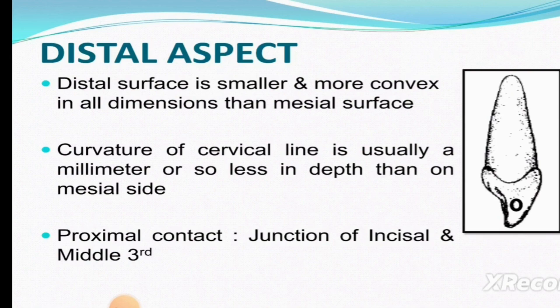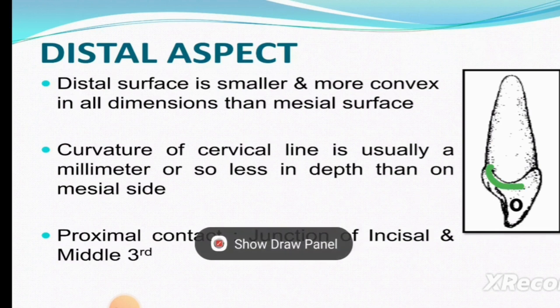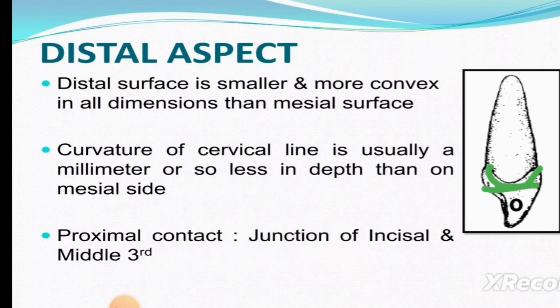The distal surface is smaller than the mesial surface and more convex. The curvature of the cervical line on the distal surface is usually about 1 mm or so less in depth than on the mesial side.